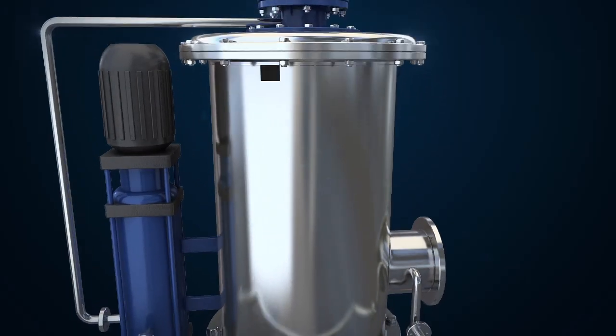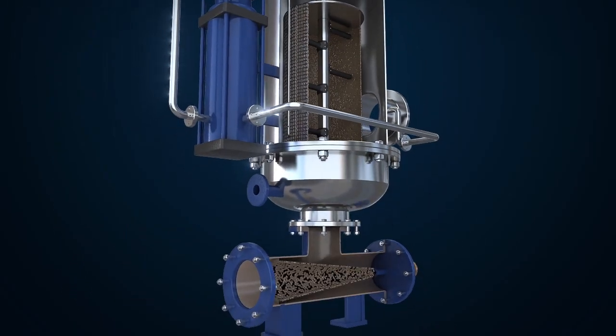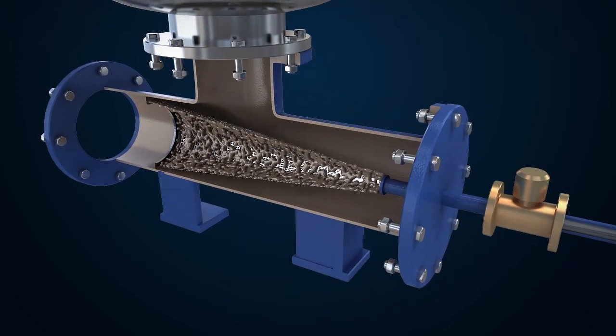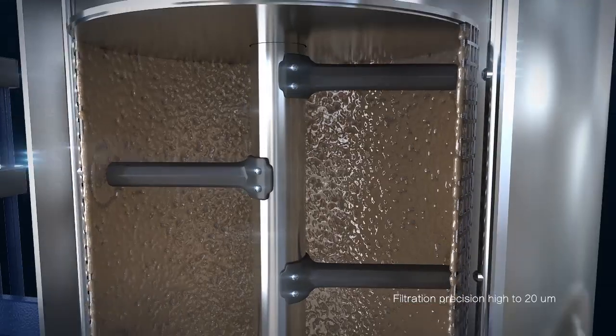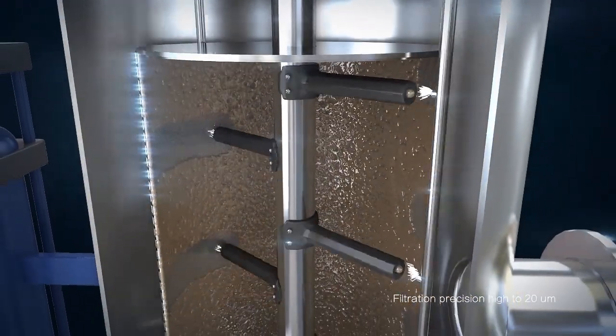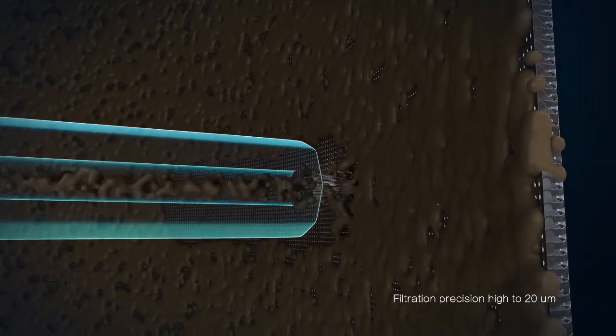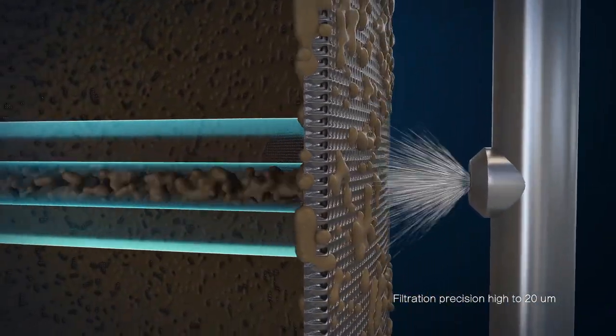For the filter, when the differential pressure reaches set value, system will back flush automatically and use 20 bar high pressed water to flush the filter, so which can run efficiently in any water condition.